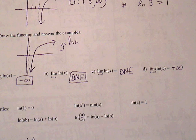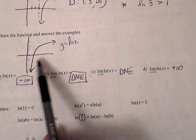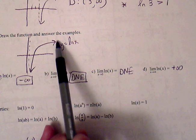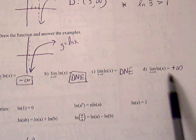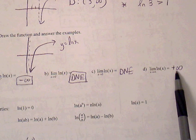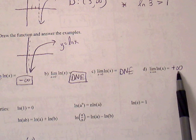For part d, limit as x approaches positive infinity, so follow the graph to the right, we see the y value keeps increasing, so limit does not exist, but we can be more specific and say it does not exist because limit is approaching infinity.